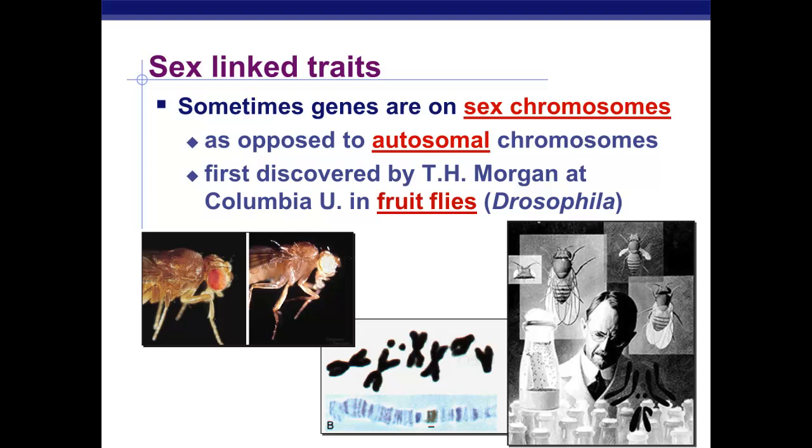He also discovered that genes are found on chromosomes, which we didn't know before him. And he worked with fruit flies, which were nice because they're small and easy to work with. And he would bombard them with X-rays so that they would get more mutations. And one day he had a mutant fly who was born, a male fly with white eyes.